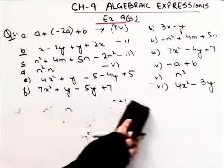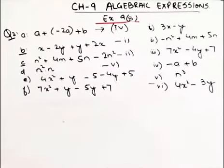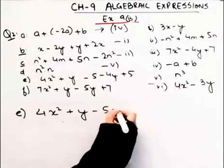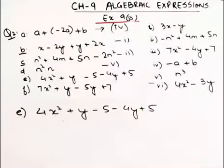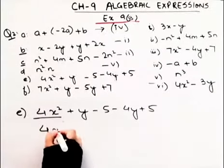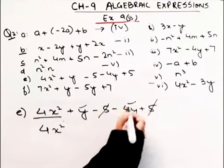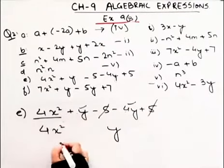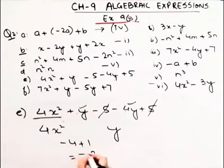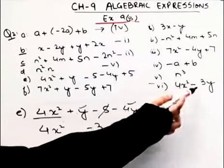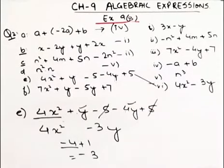For the E part: the expression has x² — there is no other like term with it, so it stays as it is. The –5 and +5 cancel out. For the y terms: y and –4y give us –4 + 1 = 3 with a negative sign, because 4 has greater value and carries the negative. So the answer is 4x² – 3y, meaning the answer for part E is 6.